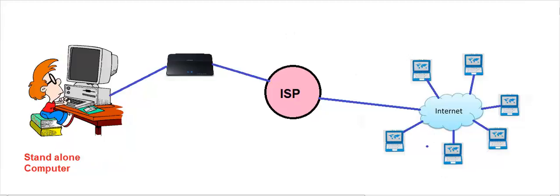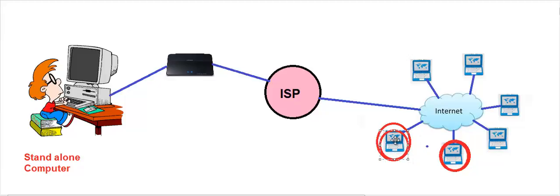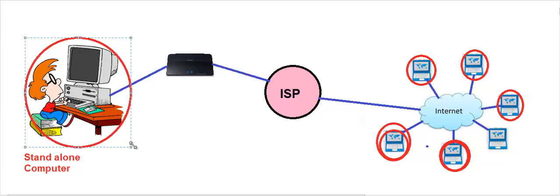Every device on the internet must have an IP address. Each computer's IP address must be different from every other computer's IP address. For all the millions of computers on the internet, each one must have a unique IP address so that our computer does not have a problem trying to pinpoint which computer it wants the file from. Each computer on the internet must have a unique IP address.